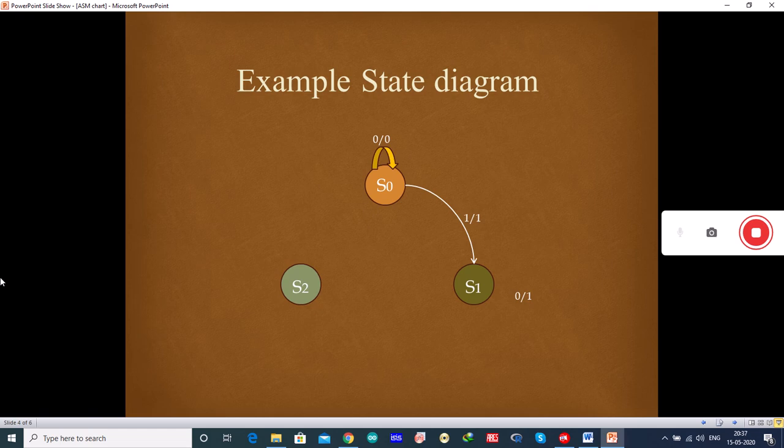And when input is 0 and output is 1, when it is in S1, it remains in the same state S1. And from S1, when the input is 1 and output is 0, it goes to the state S2.